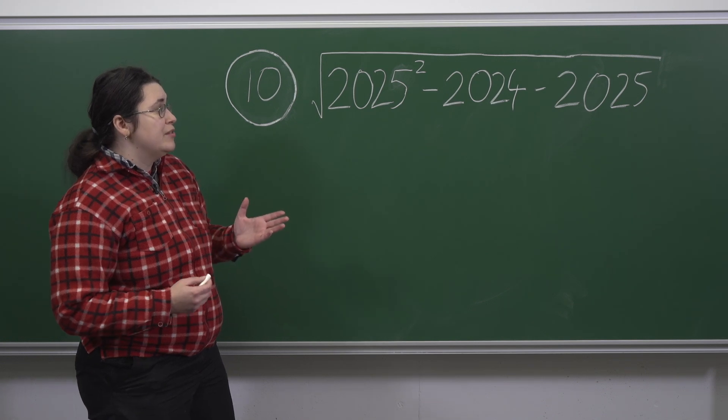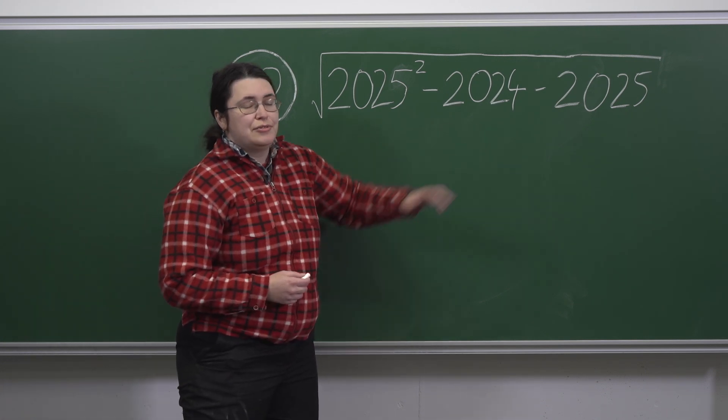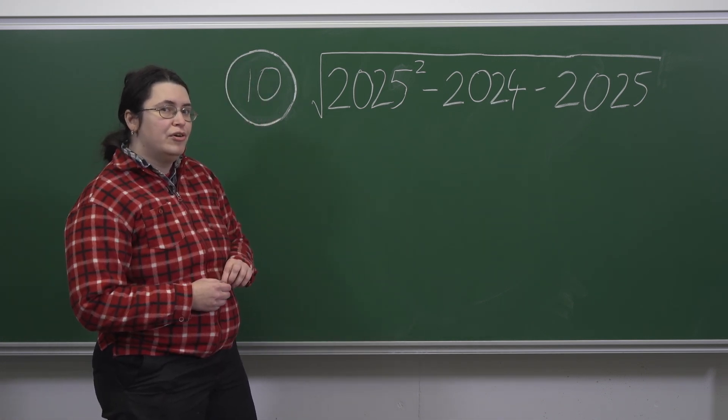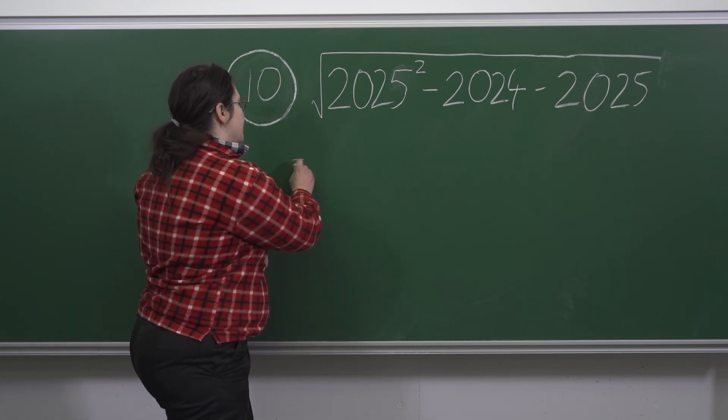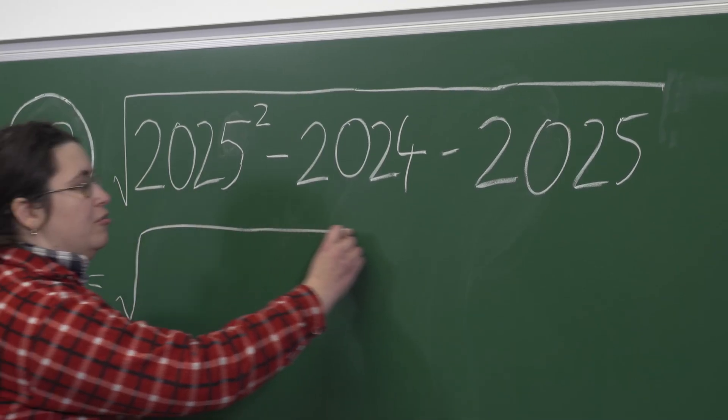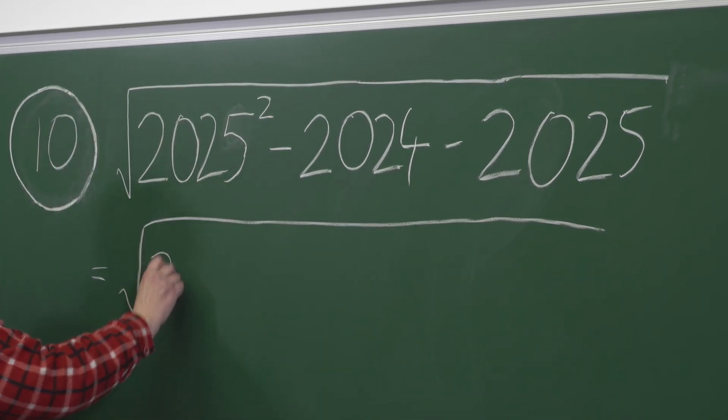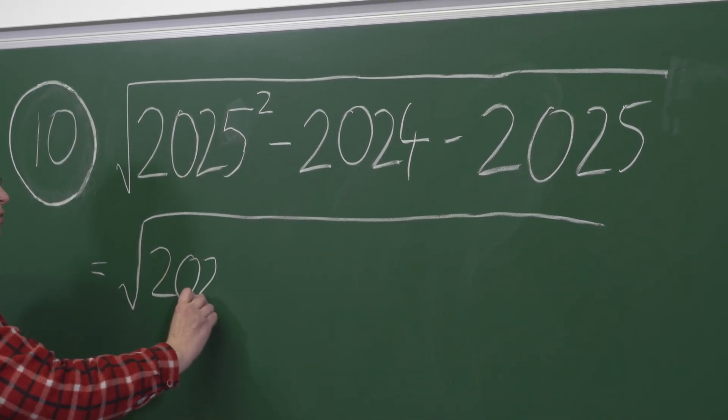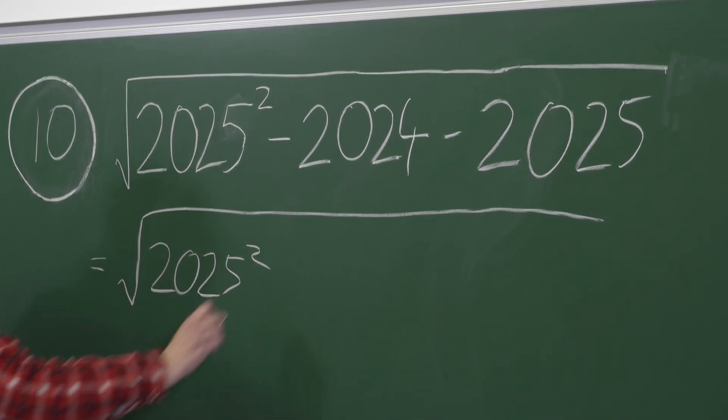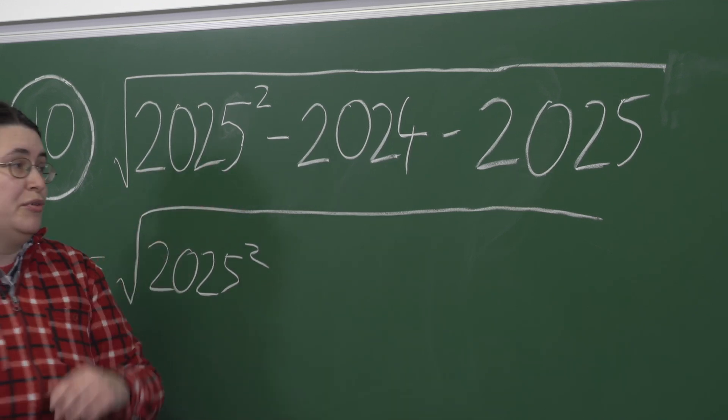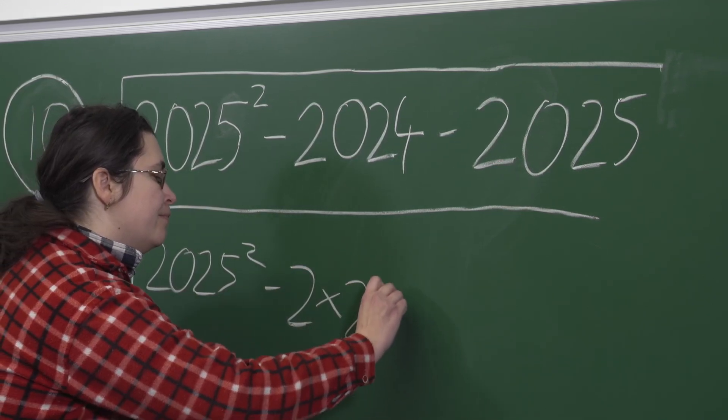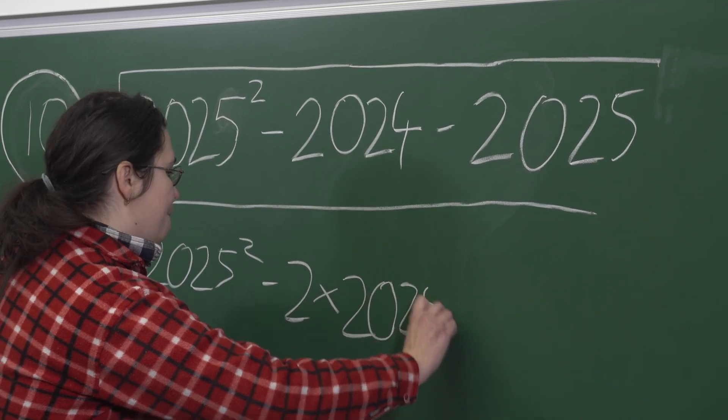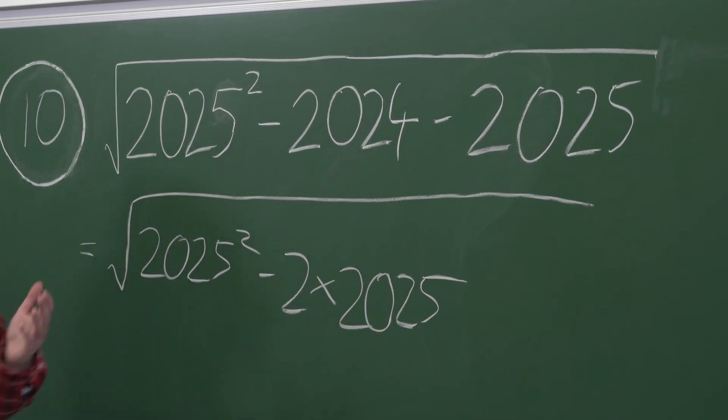One way we can start is by observing that 2024 is 1 less than 2025. So we can write the expression here as the square root of 2025 squared minus 2 times 2025, and then adding 1.